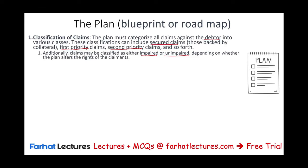The plan must show who will and who will not be impaired. It must also specifically detail the treatment of each impaired class — those where the plan modifies the claimant's rights. This could involve changing the terms of repayment to lower amounts, reducing the amount owed, taking out part of the principal, or extending the payment timeline. Within each classified group, the plan must ensure identical treatment with no favoritism — all claimants in a specific group must receive the same treatment.